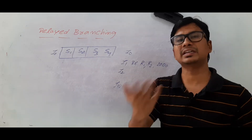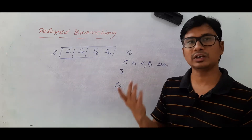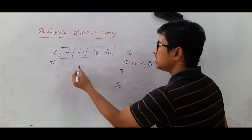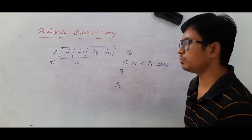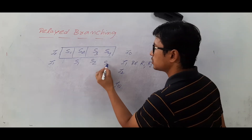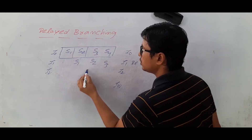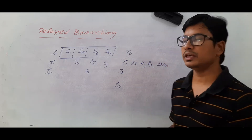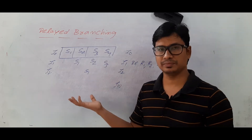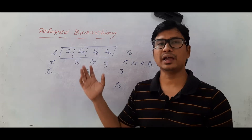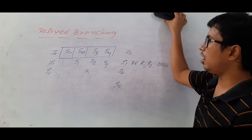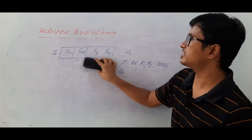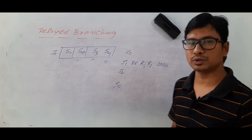Suppose I have predicted that the branch will not happen. Then I will fetch the next sequential instruction and start performing stage one and stage two. But after stage two, I come to know that the branch is actually taken. Then what should I do? I have to flush or remove all those instructions and start fetching the instruction at location 2000.